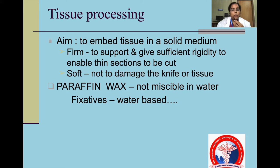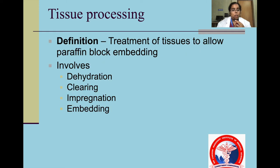Tissue processing: the aim is to embed tissue in a solid medium. It should be firm to support and give sufficient rigidity to enable thin sections to be cut, and soft enough not to damage the knife or the tissue. Ideally paraffin wax, which is not miscible in water, is used. Treatment of the tissue to allow paraffin block embedding involves dehydration, clearing, impregnation and embedding.